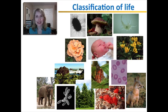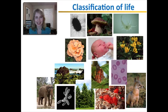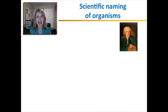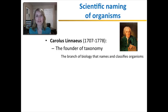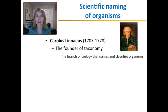This is the science of classification — the science of grouping organisms based on their similarities and differences. This was begun by a scientist named Carolus Linnaeus, who founded taxonomy, the branch of biology that deals with grouping and naming organisms.